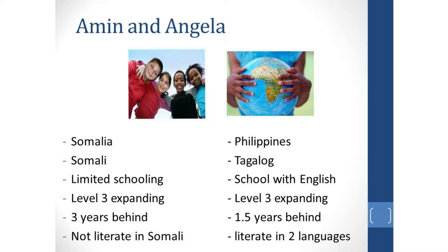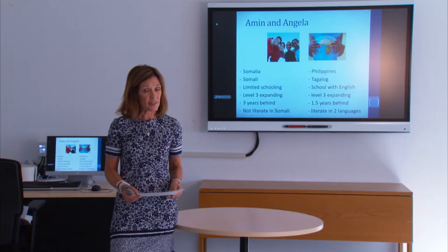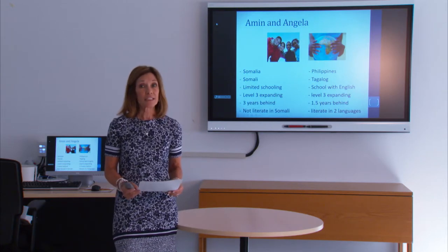These are not real English language learners but they could be. English language learners are a diverse group of students with a wide range of skills, background experiences and knowledge. They arrive with varying literacy skills in their first language and in English, as well as different academic and socio-emotional needs depending on their background. They are not a homogeneous group with similar instructional needs, therefore teaching them can be a challenge. However, we do know that classroom teachers can adapt their teaching methods and materials to meet the needs of English language learners.